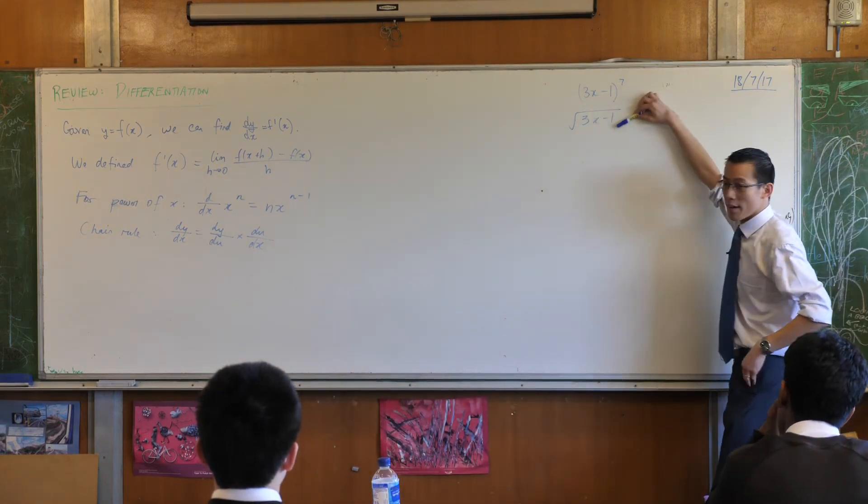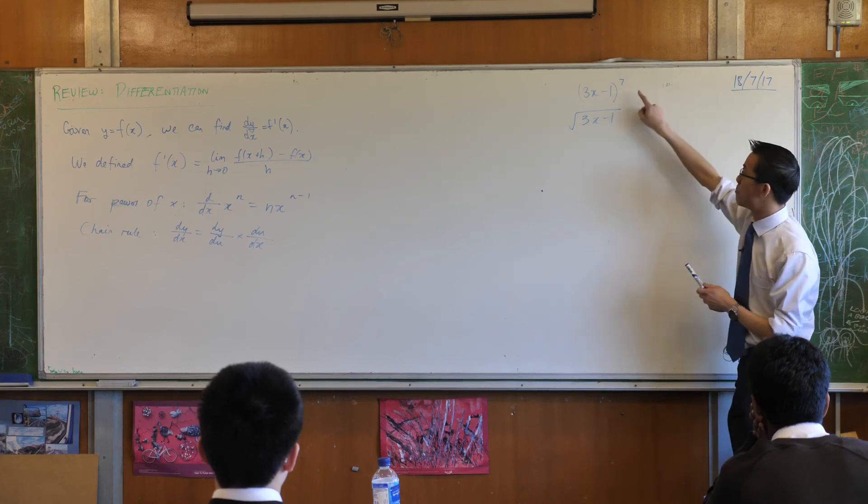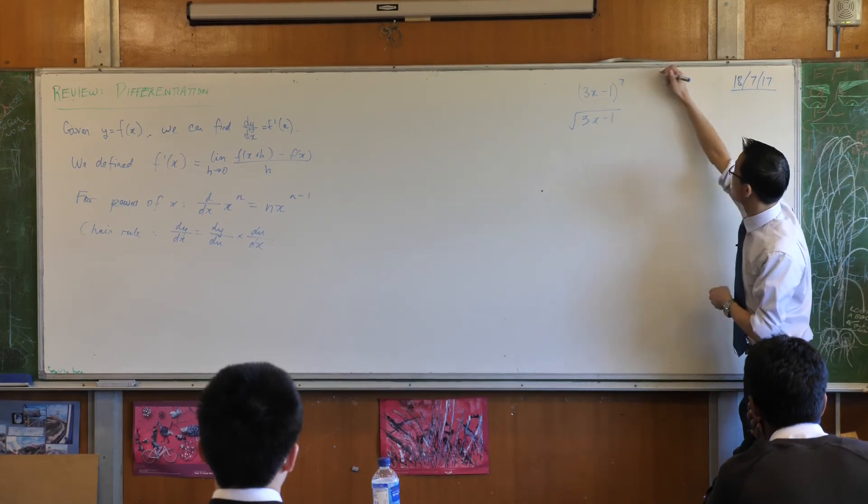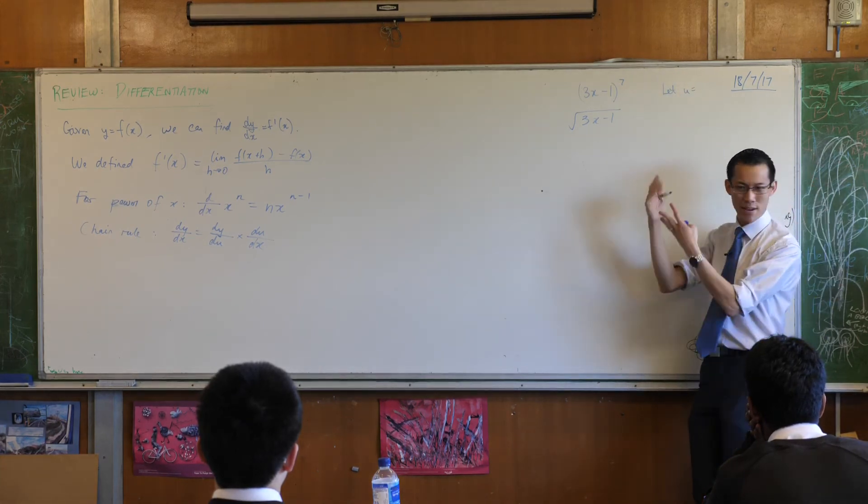And in this case, all you have to do is introduce a substitution, u. In both of these cases, what would u be equal to? So if we let u equal, so it's that inside function, 3x minus 1.